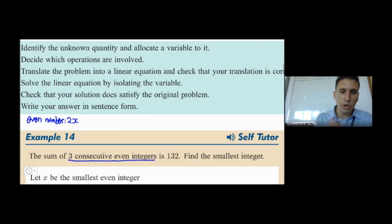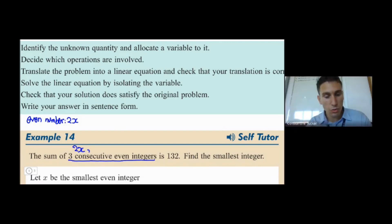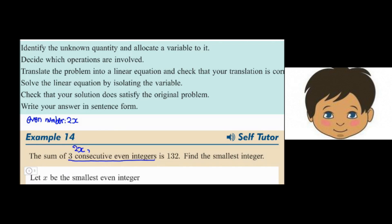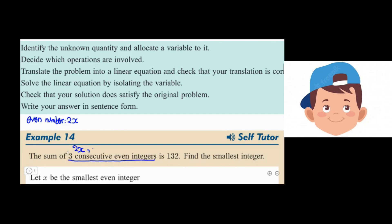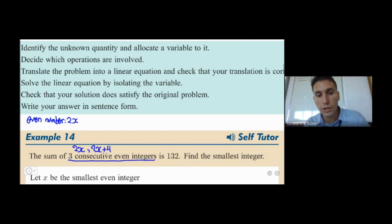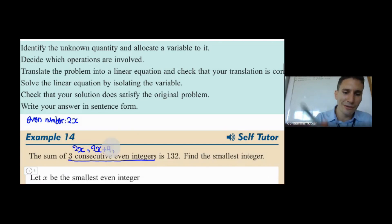If the smallest one is 2x, what would be the next one? It's not 3x — what do you need to add to get from one even number to the next? You add 2. And to get to the one after that, you add 2 again.